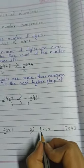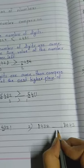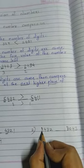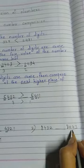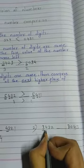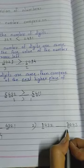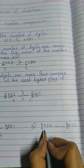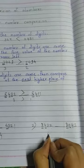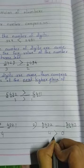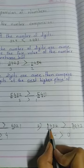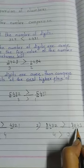Second example: 8432 compared to 8043. Both are four-digit numbers. First digit: eight and eight — same. Next digit: four and zero — four is bigger than zero. So the crocodile mouth opens towards 8432, meaning eight thousand four hundred thirty-two is bigger than eight thousand forty-three.